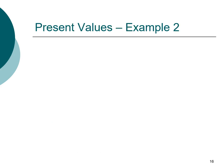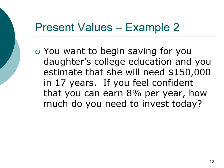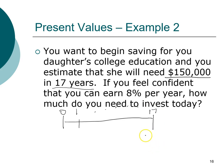Let's go through another example for practice. You want to begin saving for college, and you know that in 17 years you need $150,000. Drawing the timeline: the investment horizon is 17 years, and $150,000 occurs at the end of the horizon, so this is our future value. You believe you can earn eight percent per year.